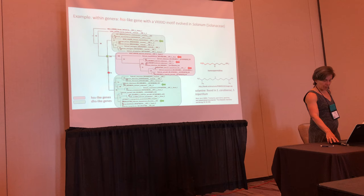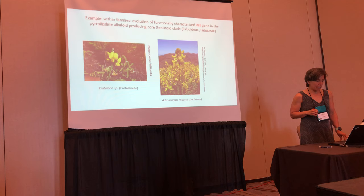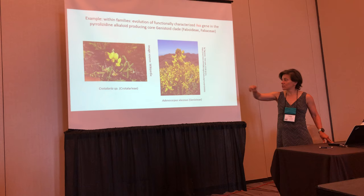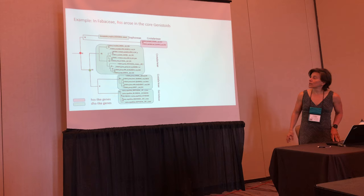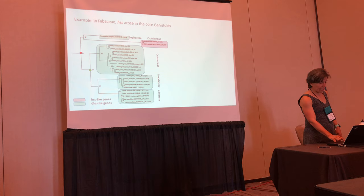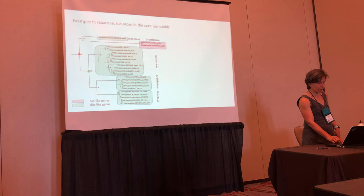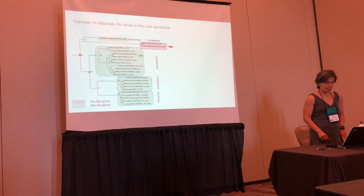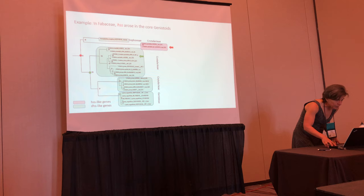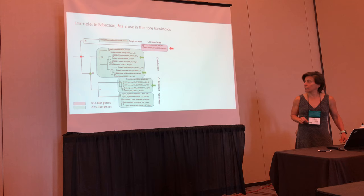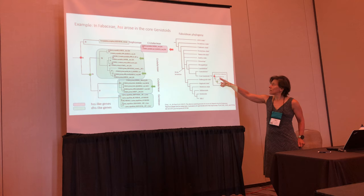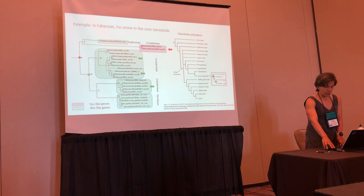Another example is within the genistoid clade. We have a number of PA-producing taxa here, such as Crotalaria and Adenocarpus. It looks like there are two duplications: one clade includes the DHS-like gene of Sophora and the HSS of Crotalaria, and then two clades of DHS-like genes — one with only sequences from Crotalaria, the other from Crotalaria and genistoid species. The gene tree suggests this is where those duplications occurred, and only Crotalaria and other genistoid taxa are known to produce PAs.